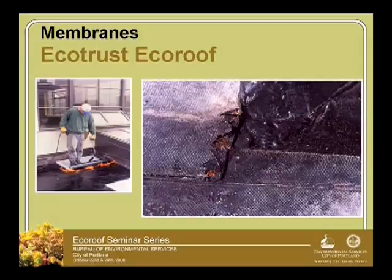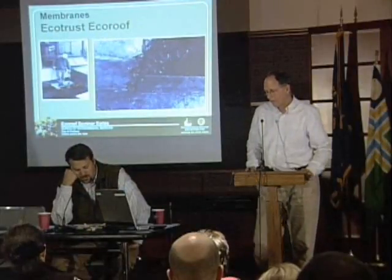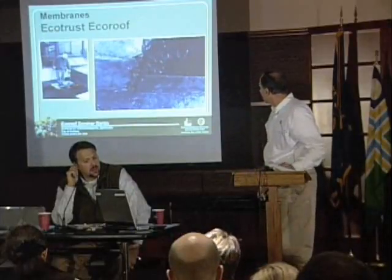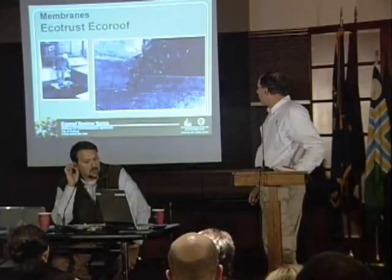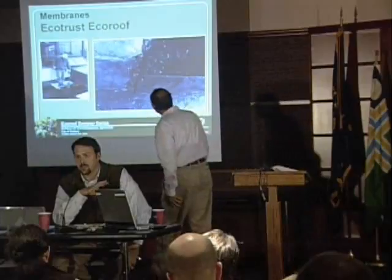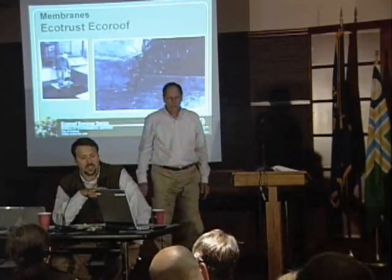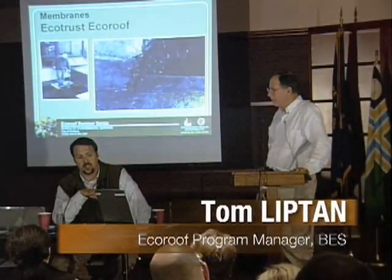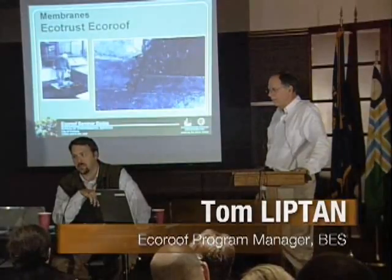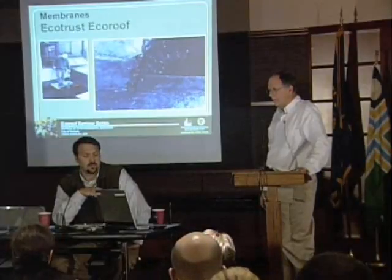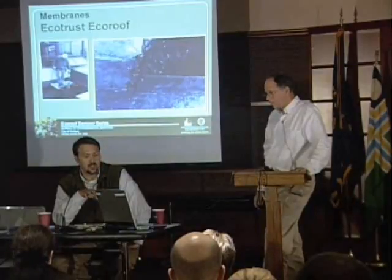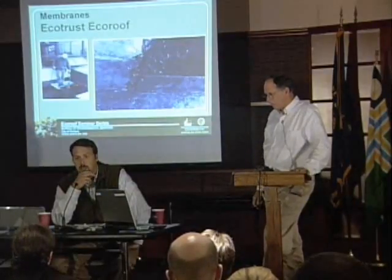The Ecotrust building used a torch-down method: the modified asphalt was in rolls, and at any seam a torch was used to soften it and create a bonded seam. One important safety note about torch-down is that a flame is involved, so you must ensure no combustible materials are adjacent to where the membrane is being applied. We heard through the grapevine that New York City doesn't allow torch-down within city boundaries because of the fire hazard — something to consider when specifying materials that could be combustible.